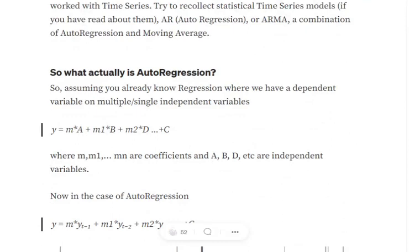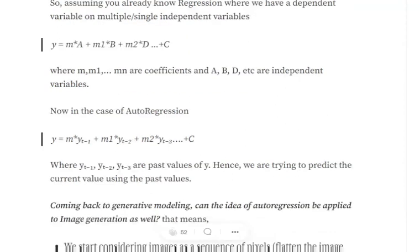Assuming you already know what regression is — in regression we have the equation y = m·a + m1·b + m2·d, where a, b, d are different independent variables and y is the dependent variable. In case of auto-regression, instead of using different features, we use the lagged version of the same feature. For example, to predict y at time t, we use its past values: m·y(t-1) + m1·y(t-2) + m2·y(t-3). So to predict the future value, we use past values, and the rest of the setup remains the same as in regression.